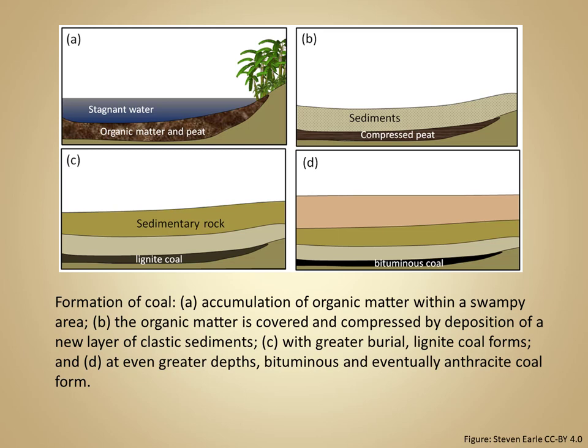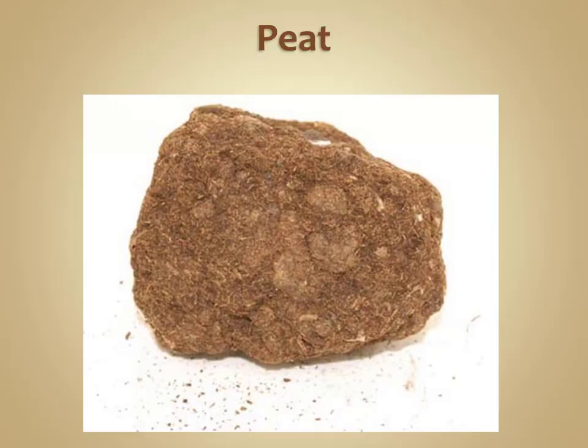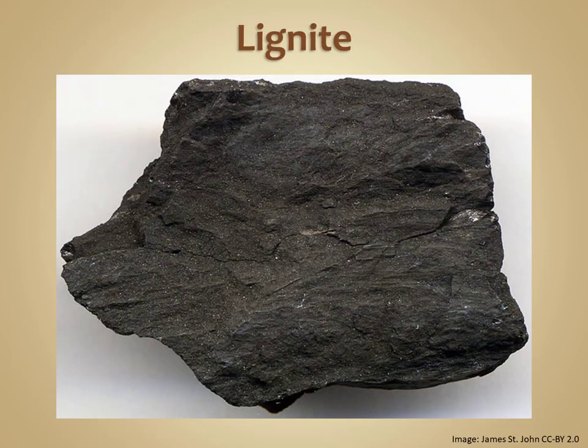Coal formation occurs in four stages. The first is the rapid deposition of plant material, typically underneath a stagnant body of water such as a swamp, which prevents decay. This is then buried under successive sediment, where it compacts to form a sedimentary rock called peat. If further compaction occurs through further burial, peat can then become lignite.